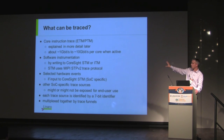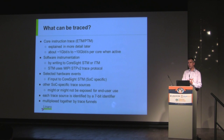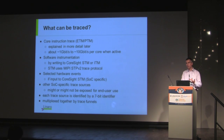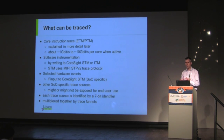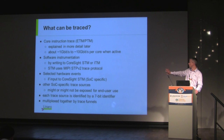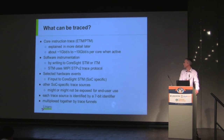The core instruction trace is what I'll be mostly focusing on. This generates a lot of trace when running at full speed — talking about 1 gigabit to 10 gigabits per second, depending on clock frequency, trace options, and the amount of branches in the code. The software instrumentation is purely under software control; software stimulates the STM to write messages into the trace stream. We can also hook up the STM module to hardware events to collect signals from across the chip, though that's very chip-specific.